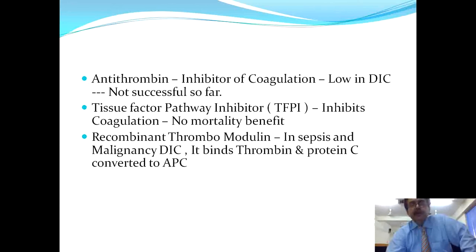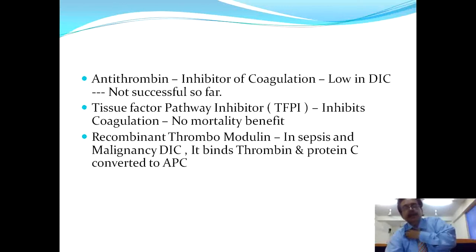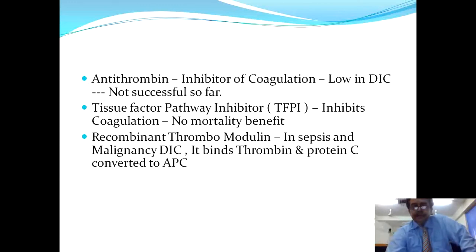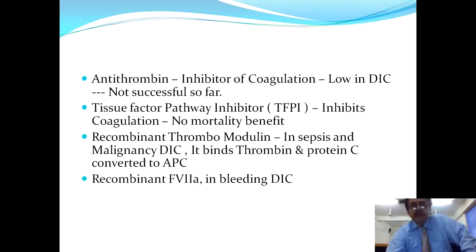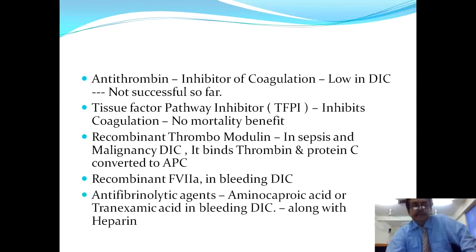Antithrombin, an inhibitor of coagulation, is low in DIC but has not been successful therapeutically so far. The tissue factor pathway inhibitor (TFPI) inhibits coagulation but there is no mortality benefit as shown by multiple studies. Recombinant thrombomodulin can be offered, especially in septic and malignancy DIC states — it binds thrombin and protein C, which is converted into activated protein C. Recombinant factor 7a can also be given in the bleeding variety of DIC. Anti-fibrinolytic agents — aminocaproic acid or tranexamic acid — in the bleeding variety of DIC along with heparin can also be given.